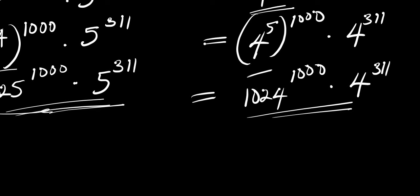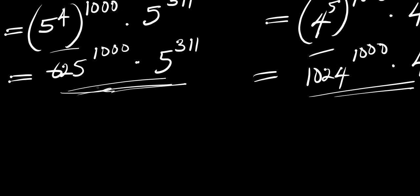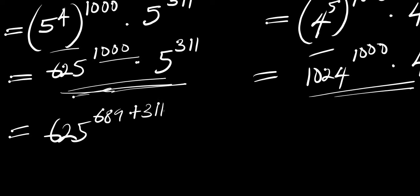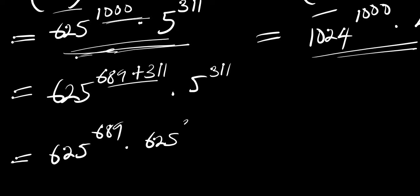Now let's go back to the first expression: 625^1000 times 5^311. We can further rewrite the exponent 1000 as 689 plus 311. Applying that same identity, we get 625^689 times 625^311 times 5^311.